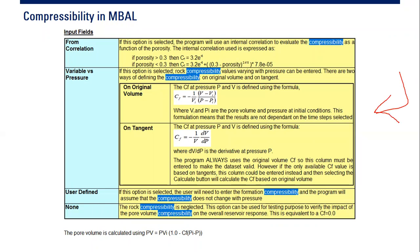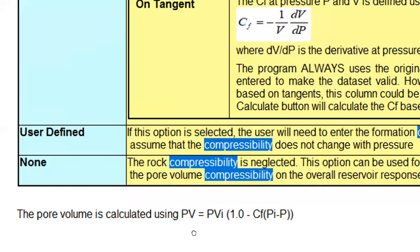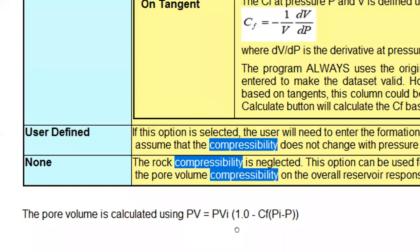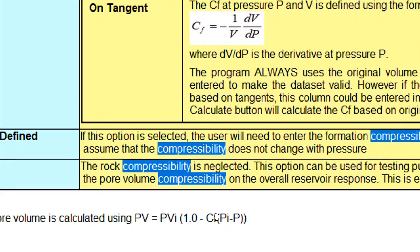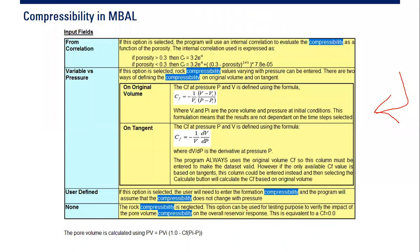If you have software, you will need to read the manual to know how it estimates compressibility. The pore volume is calculated as initial pore volume multiplied by one minus formation compressibility multiplied by (initial reservoir pressure minus current reservoir pressure). Compressibility is utilized in reservoir simulation, material balance calculation, and flow equations. That concludes the discussion on compressibility; the next topic will be heterogeneity.